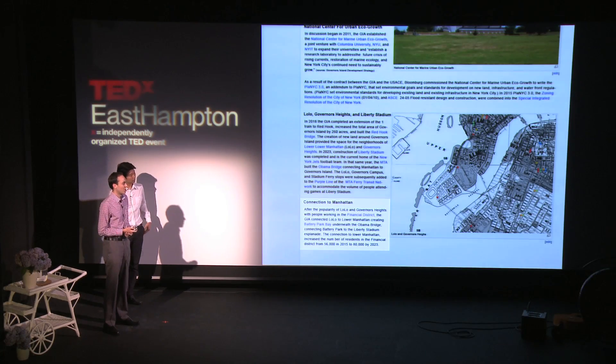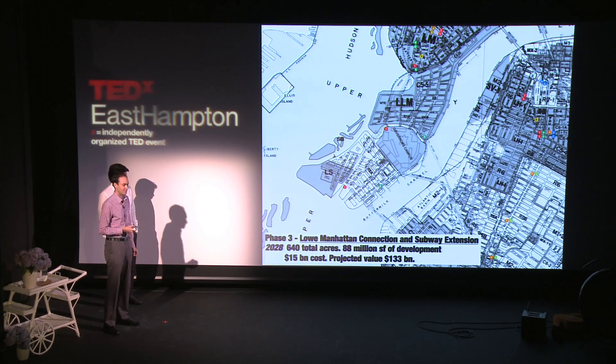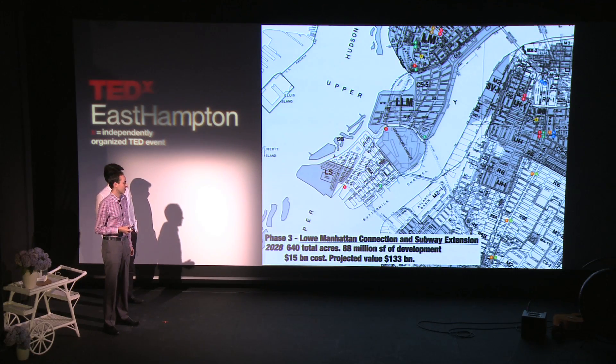We start to look at some divergent futures. In one version, the Governor's Island Authority is pressured to extend Governor's Island to Red Hook, but we found it oversaturated the market and there wasn't enough demand for that much new land. The alternate future we chose to explore in more depth is a connection to Manhattan. In this scenario we've created 640 acres of new land and 88 million square feet of developable space at an investment of $15 billion, creating $133 billion in present-day value and generating $900 million in tax revenue annually for the city.